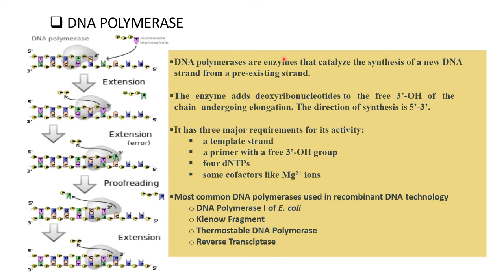DNA polymerases are enzymes that catalyze the synthesis of a new DNA strand from a pre-existing strand. The enzyme adds deoxyribonucleotides to the free 3' OH of the chain undergoing elongation. The direction of synthesis is 5' to 3'. It has three major requirements for its activity: a template, a primer with a free 3' hydroxyl group, and dNTPs, plus cofactors like magnesium ions.